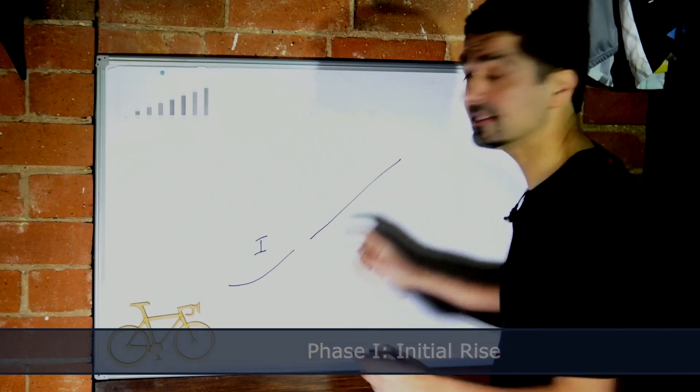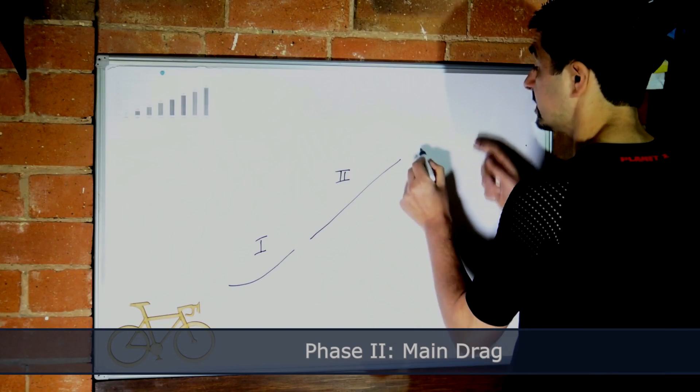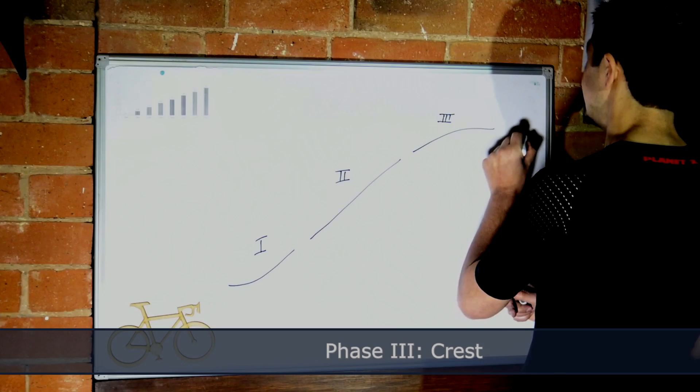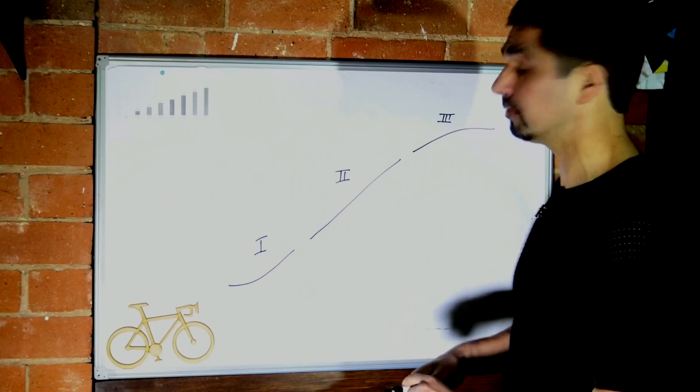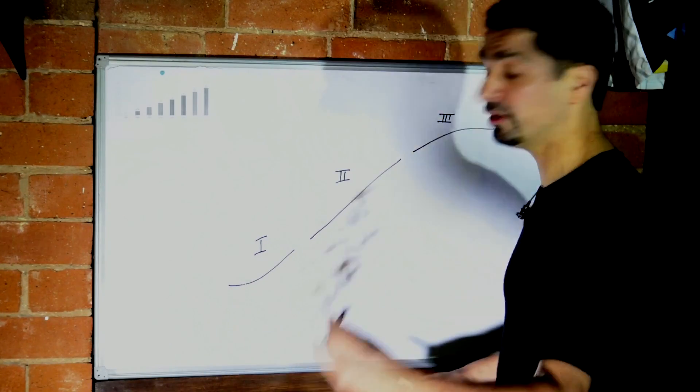We've got the initial phase, phase one, which is the initial rise. We've got the middle phase, the main drag of the hill, which is phase two. And then we've got the summit or cresting phase, phase three. Now we do have the descent as well, we'll talk about that in another video. So that's how we're going to break it down with my little friend here, Mr. Wooden Cyclist.